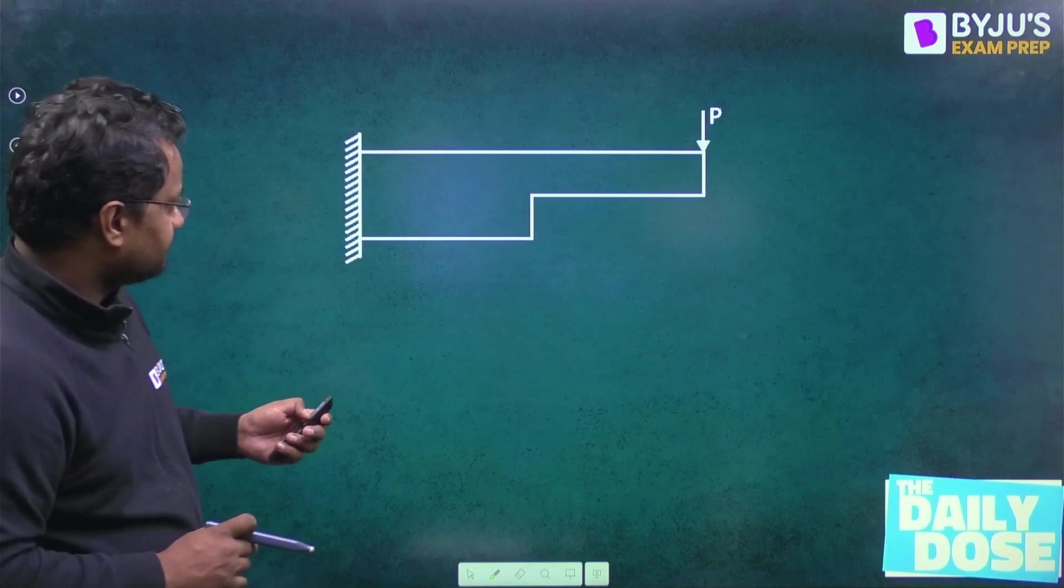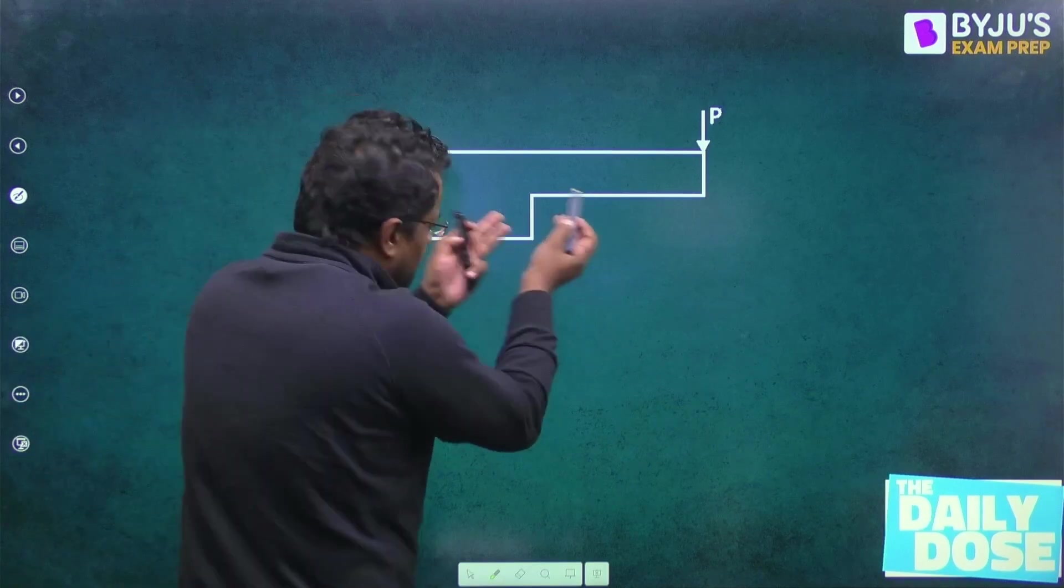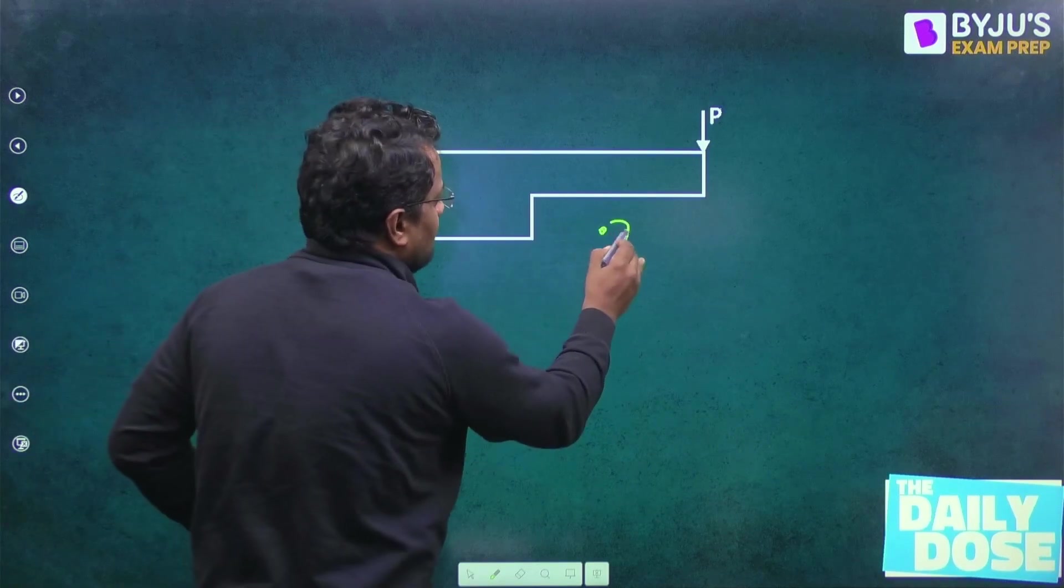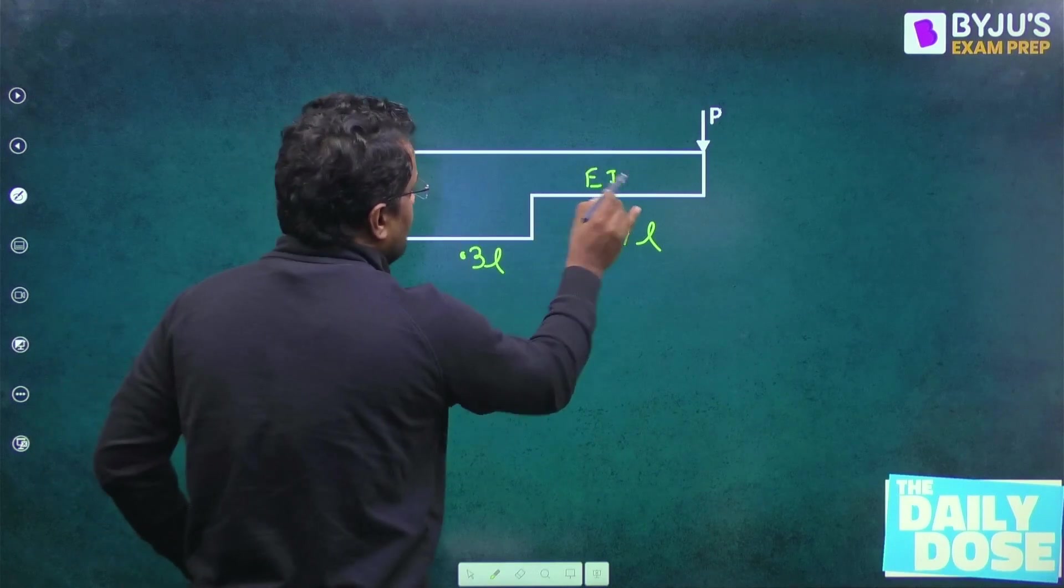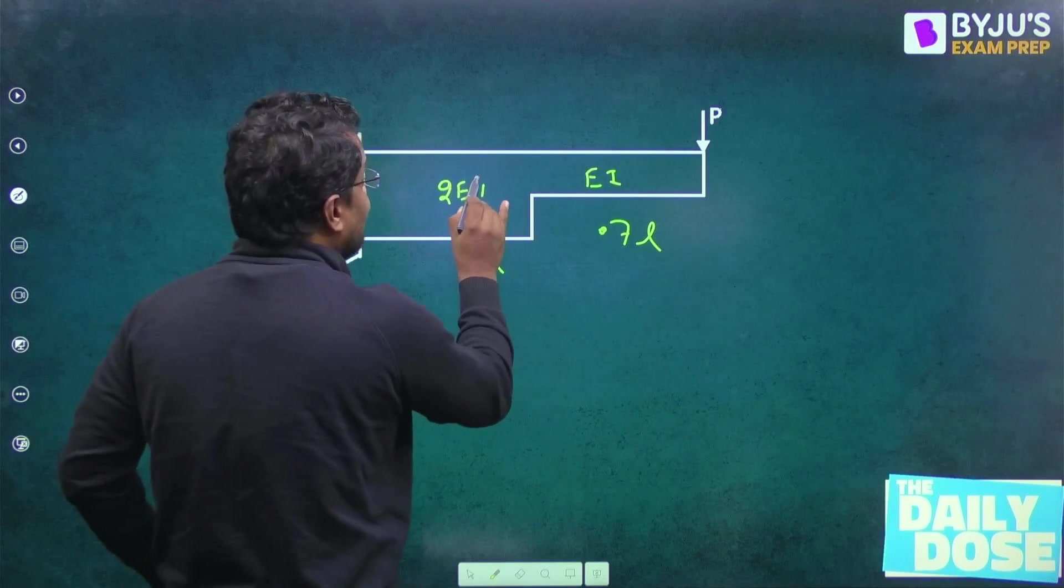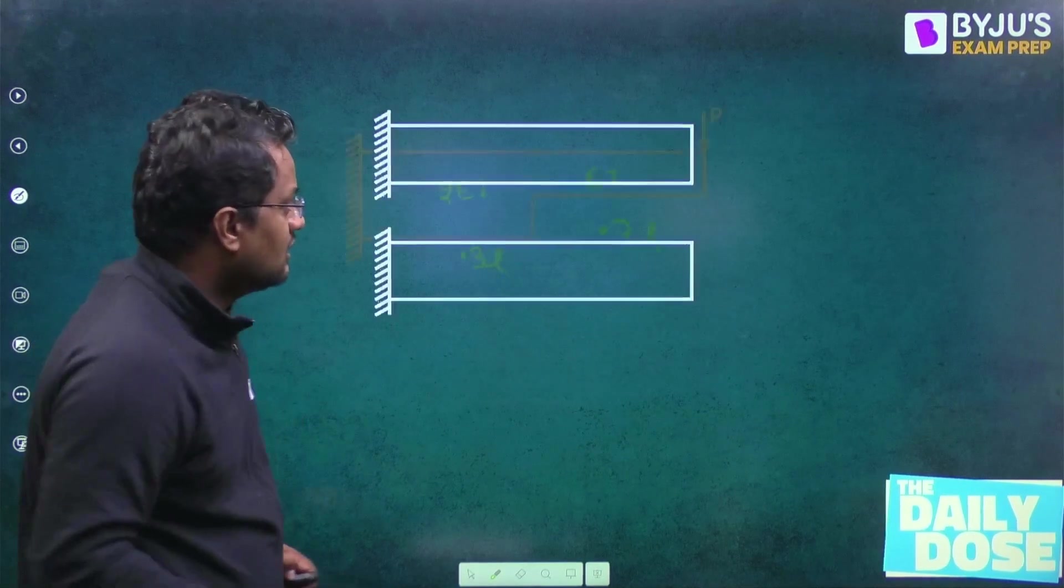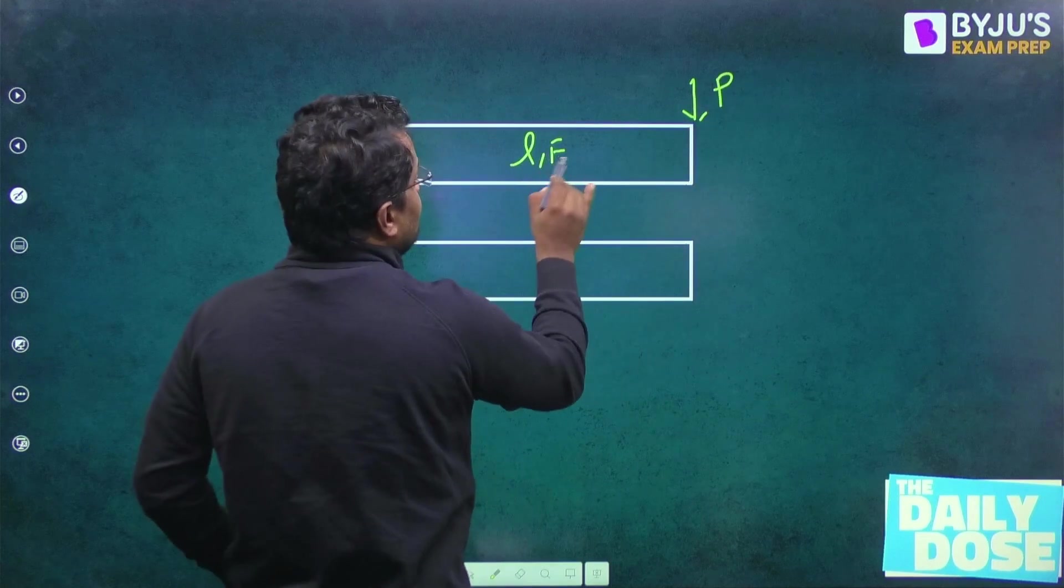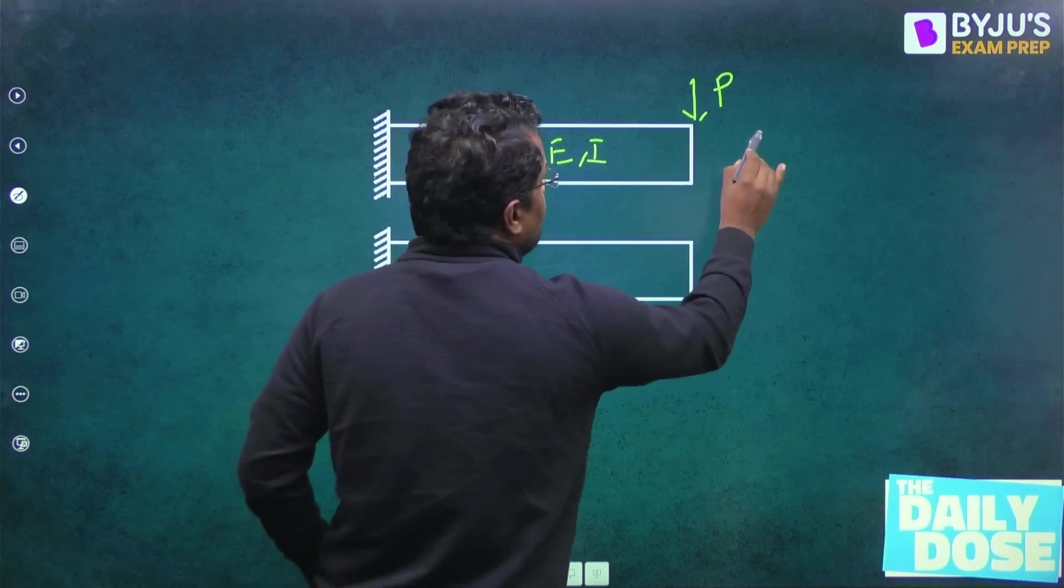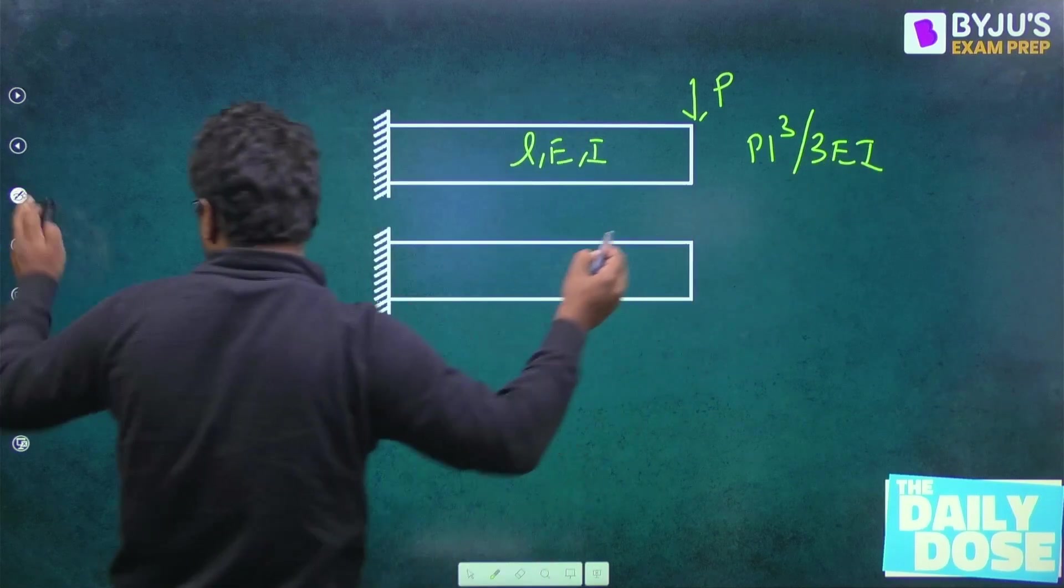Suppose these types of questions are coming. So this length is maybe 0.5L, let it be 0.7L and let this be 0.3L. Now here it is EI and here is 2I. Suppose you don't know the right answer. Then what to do? Just when it is P and this is L, this is E, this is I. What is the deflection here? PL cube by 3EI. This is the standard result. Everybody knows this.